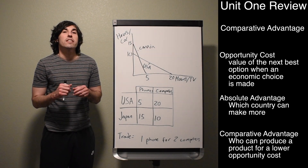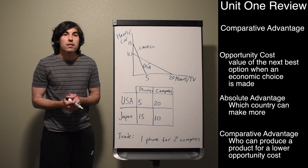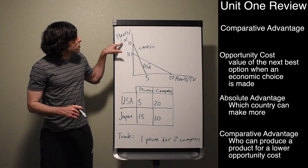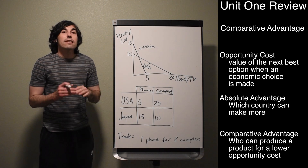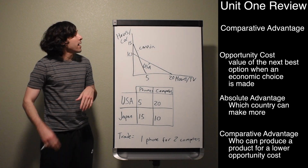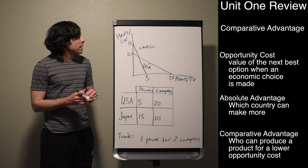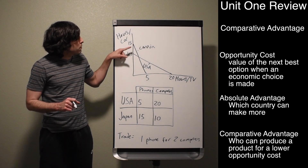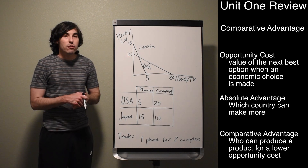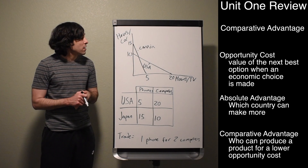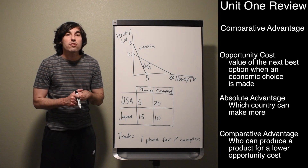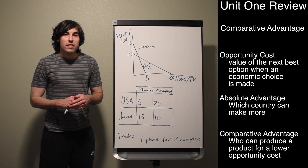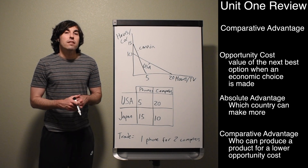Absolute advantage is the country that can simply make more of a product. In an input problem, it's the country with the lowest number of hours. So who has the absolute advantage in producing a car? Canada takes 15 hours to produce one car; the US takes 10 hours. That means the US has the absolute advantage in producing cars.